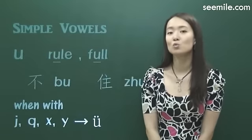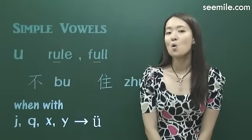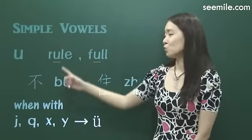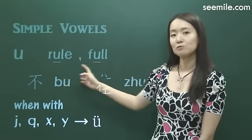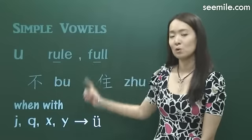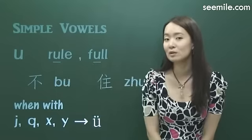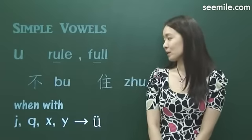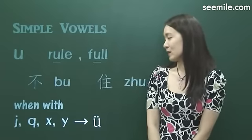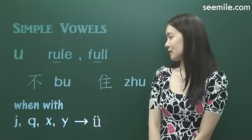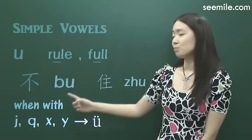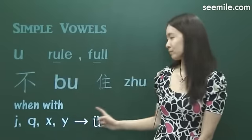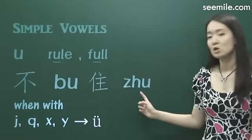The last one is 呜. 呜 is like the 'u' in 'rule', 'full', or 'moon'. It's 呜. So for example, in Chinese: 布, 住.